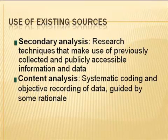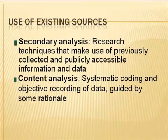Use of existing resources is also a good way to do sociological research. One technique is called secondary analysis, which makes use of previously collected and publicly accessible information and data. For example, I may want to find something out about the southern region of states in America and could rely on census data. The information's already been collected — I just need to identify the variables. The problem is that I don't have contact with the research subjects, so if I need to follow up on a response, I can't reach that person, which can be limiting for in-depth research questions.